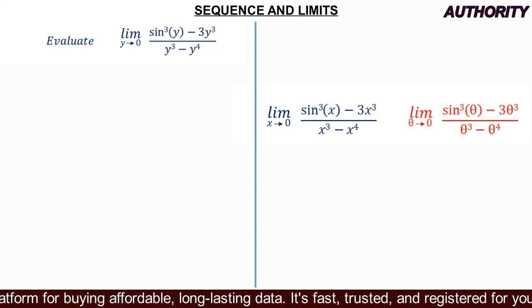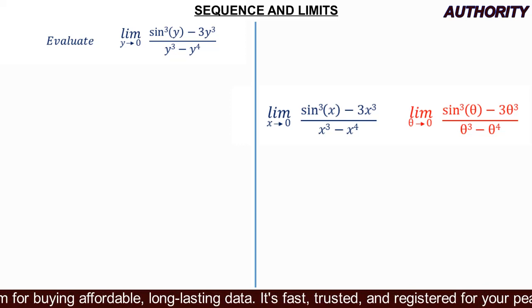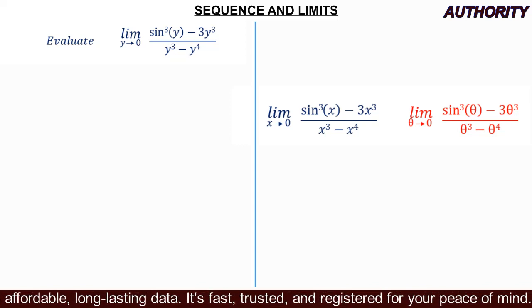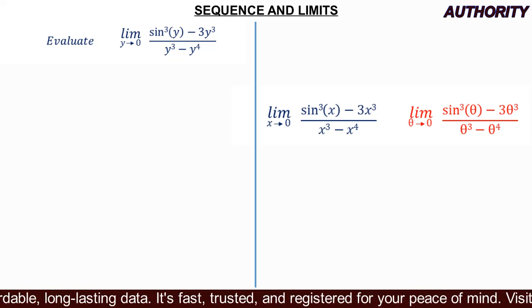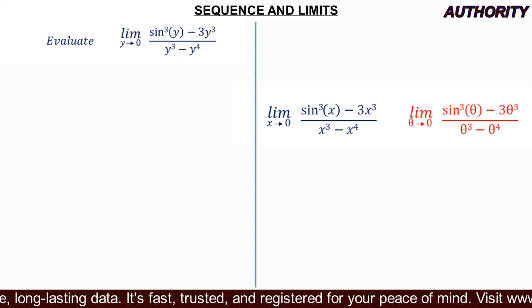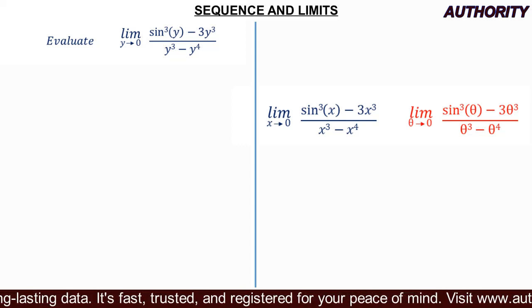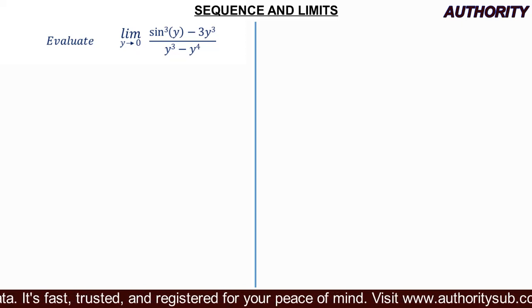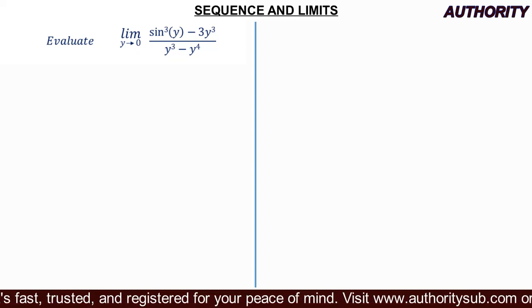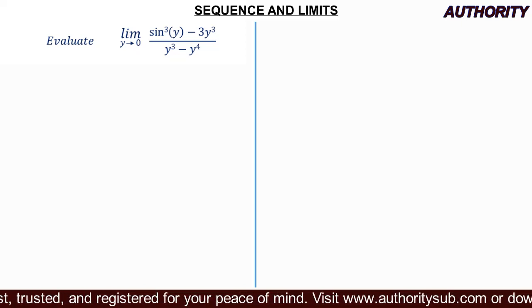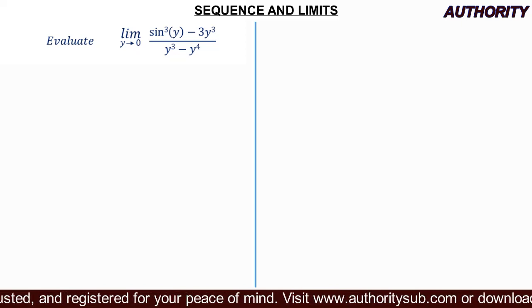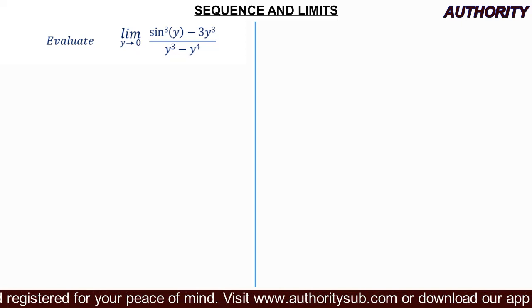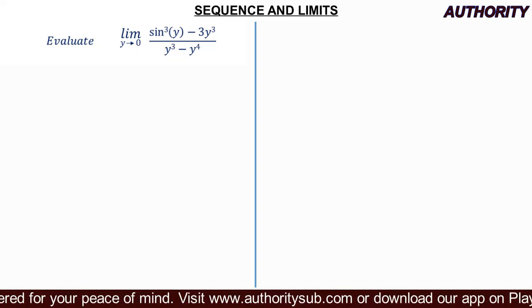You see one question appearing in three different forms, so any of them that comes your way, we will see how to solve it. It's very simple. Now let's work with y: limit as y approaches zero of sine cubed y minus three y cubed, all over y cubed minus y raised to the power of four.